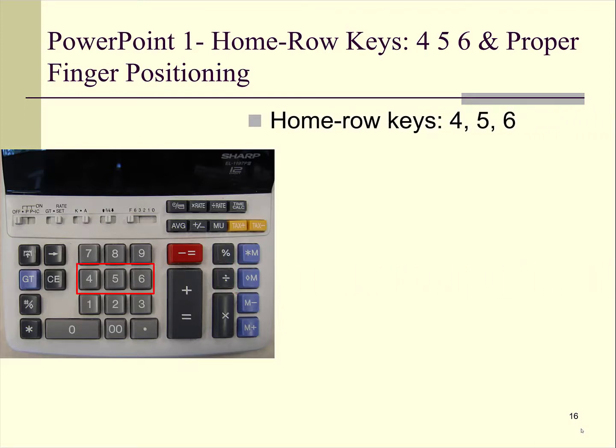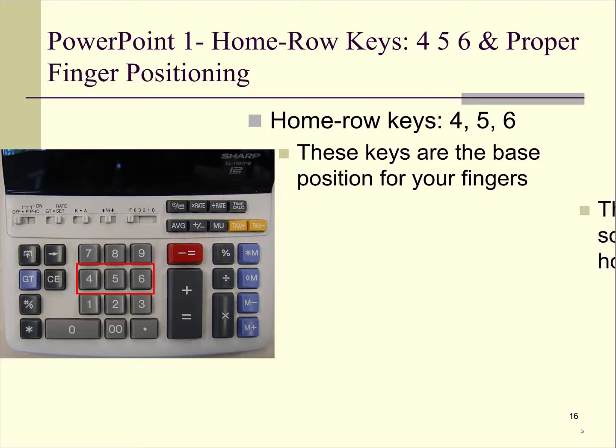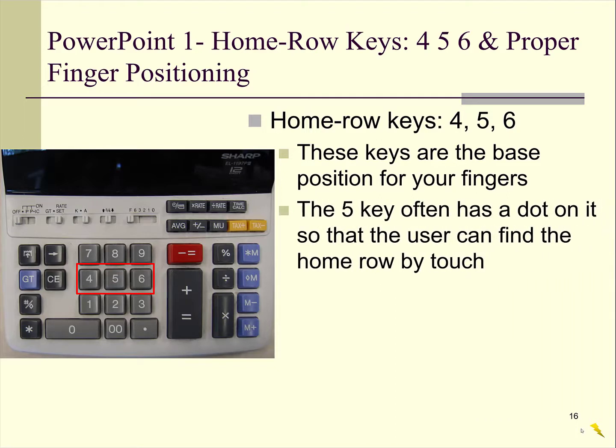So the home row keys 4, 5, and 6 are the base position for your fingers. Notice that the 5 key often has a dot on it, so that the user can find the home row by touch.